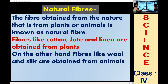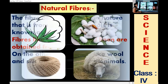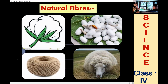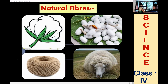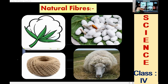Here is an example I will show you of natural fiber. That is cotton, again jute, and here sheep — sheep also gives us wool. And the silkworm gives us silk. So these are the examples of natural fiber.